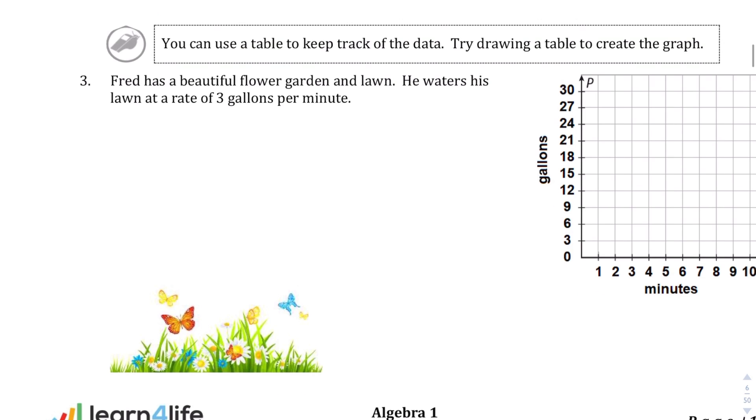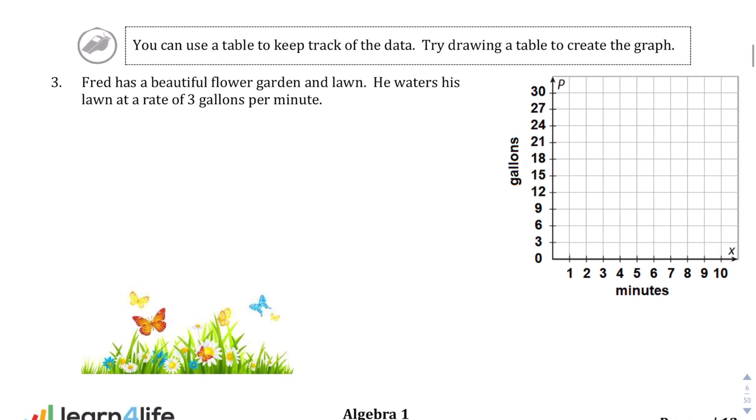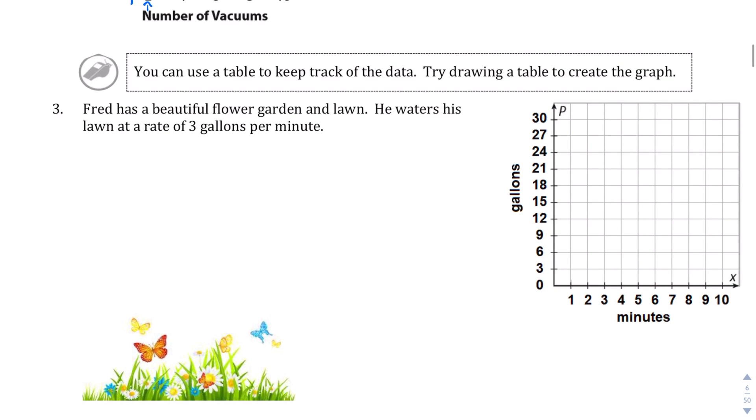Let's take a look at question number three. Lastly, Fred has a beautiful flower garden and lawn. He waters his lawn at a rate of three gallons per minute. Let's see. So we're comparing gallons to minutes. So let me actually grab this first. So after every minute, it's going to increase at three gallons. After one minute, we're at three gallons. After two minutes, we're at six gallons. So on and so forth. And multiples of three, it looks like. So if we go ahead and graph all this, this is what it's going to look like.